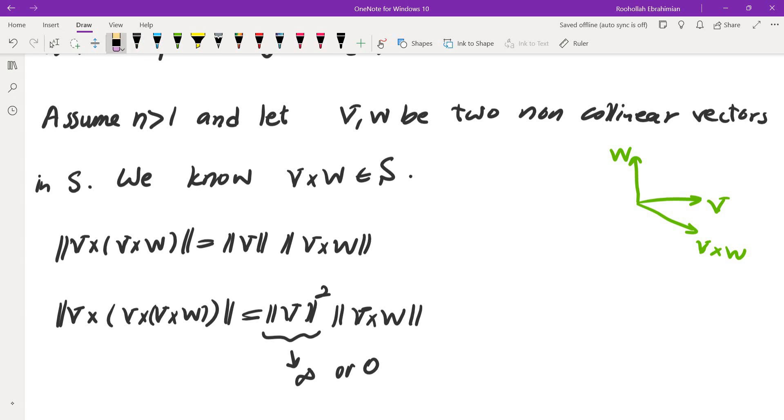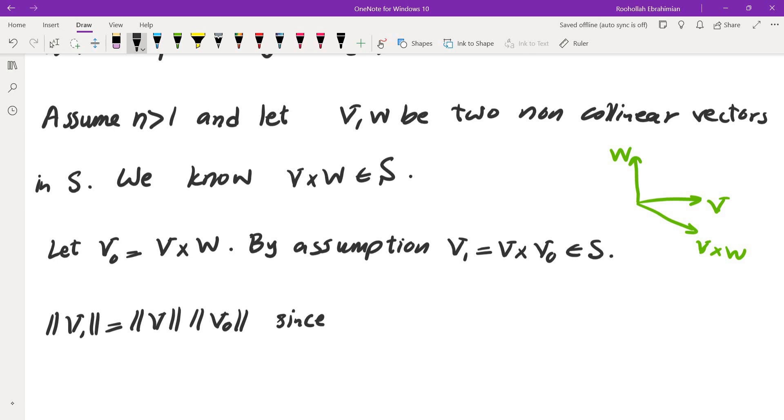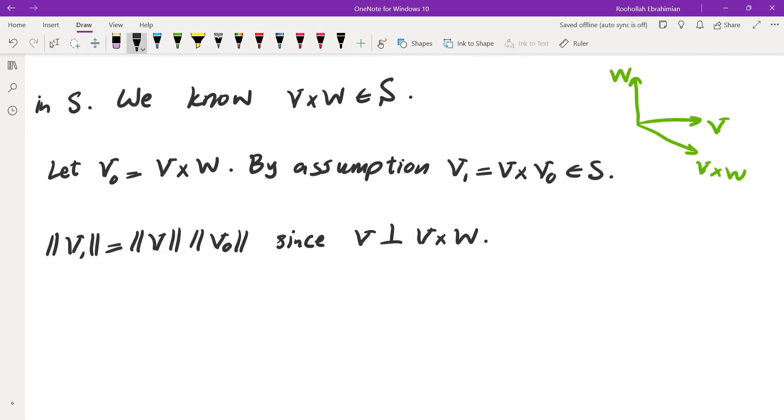So let's actually write this down more formally. Okay, so now that we got the idea, let's write it down more formally. So let V₀ be V cross W. By assumption, V₁ equals V cross V₀ is also in S. Magnitude of V₁ is equal to magnitude of V times magnitude of V₀, since V is orthogonal to V cross W.